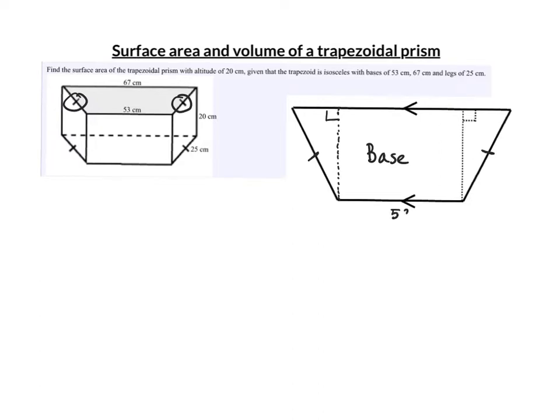We have 53 and all the way across the other length, the other base, is 67. And so we'll subtract. We'll take 67 minus 53 which gives us 14.